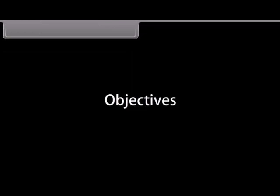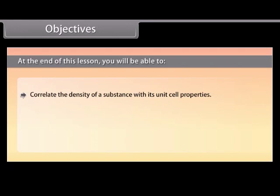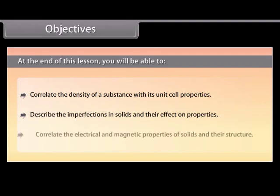Objectives. At the end of this lesson you will be able to: correlate the density of a substance with its unit cell properties; describe the imperfections in solids and their effect on properties; and correlate the electrical and magnetic properties of solids with their structure.